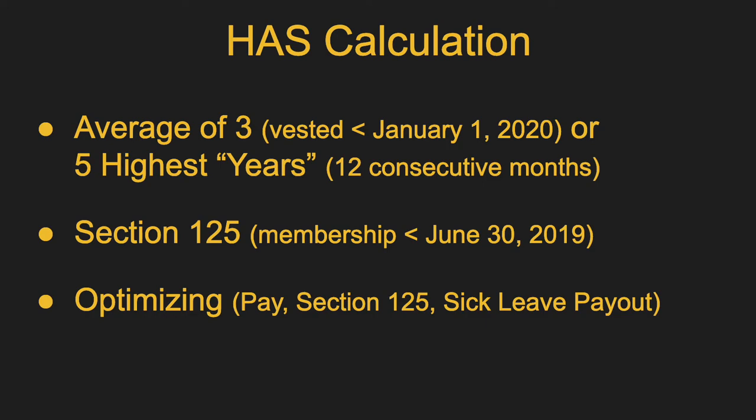Some districts have a sick leave payout that is now considered PERA-includable salary, and it actually gets counted as an additional month. So if you have a decent amount that qualifies, you will actually get one more month of service credit. For example, if you had 30 years teaching, you would get a benefit based on 30 years and one month. If that sick leave payout is high enough, it could also increase your HAS. Keep in mind there are provisions in PERA's laws and rules to prevent spiking — you are limited to an 8% increase from year to year to be counted for your HAS calculation.